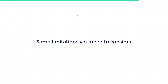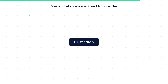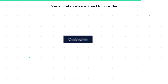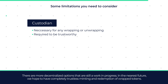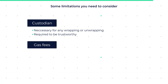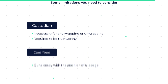Some limitations to consider: we talked about the need for a custodian for wrapping and unwrapping to work. You can't get any wrapped token for cross-chain transactions without going through a custodian, so it is required that the custodian holding the funds is trustworthy. There are more decentralized options that are still a work in progress, and in the future, we hope to have completely trustless minting and redemption of wrapped tokens. Another drawback is the expense of gas fees, making the minting process quite costly with the addition of slippage.